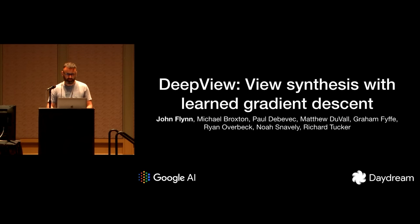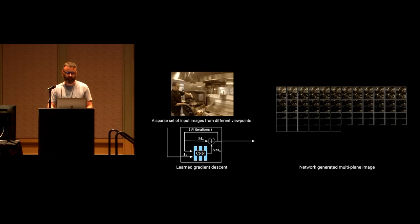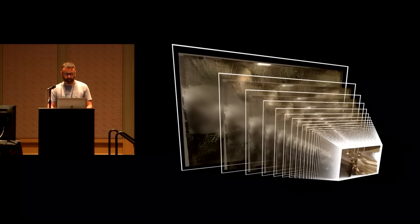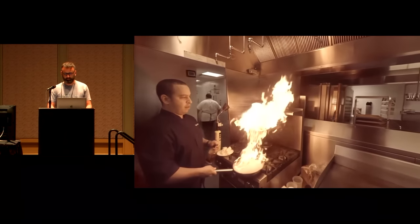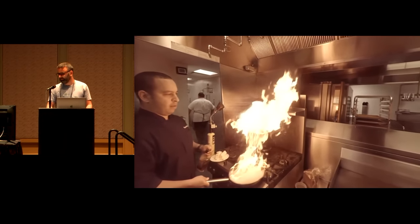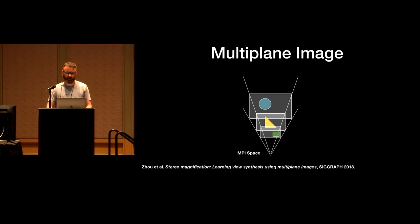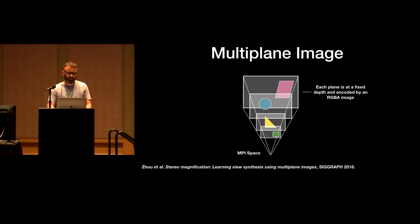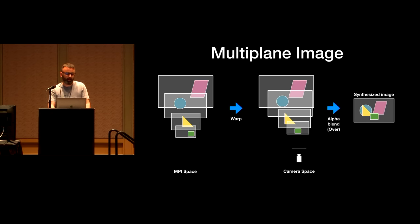I'm John Flynn and I'm presenting Deep View Synthesis with Learned Gradient Descent. We present a new technique for photorealistic view synthesis. Given a sparse set of input views, our method uses learned gradient descent to generate a multi-plane image (MPI), a representation of the scene that allows real-time re-rendering to new viewpoints with standard graphics hardware. MPIs can model complex appearance effects including transparency, reflections, and volumetric effects. An MPI consists of a set of planes with associated RGBA texture maps, positioned at equally spaced inverse depths with respect to a virtual reference camera. To render an MPI to a new viewpoint, we warp the MPI images and composite them using standard alpha blending.